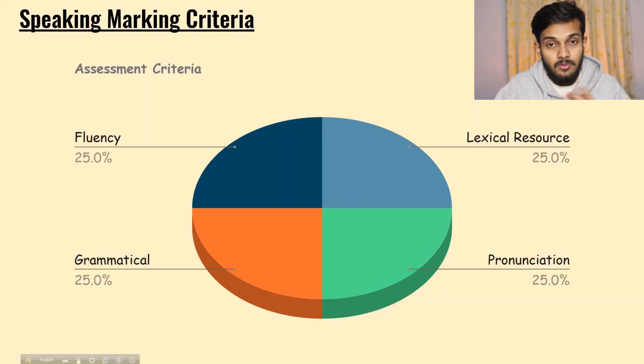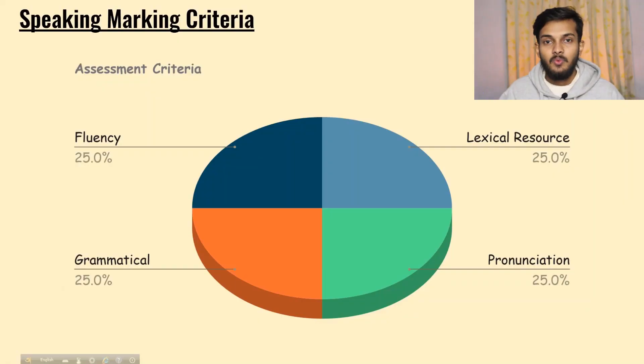Lexical Resource means, in simple words, using a lot of vocabulary and not repeating the same word again and again. The more different and new words you use in your speech, the higher your band score in Lexical Resource. Grammatical Range refers to how correct and well-structured your sentences are — whether the sentences you deliver are grammatically correct or not.